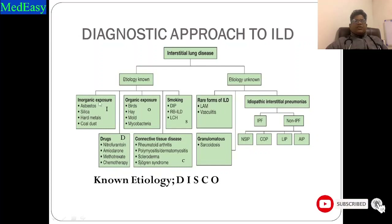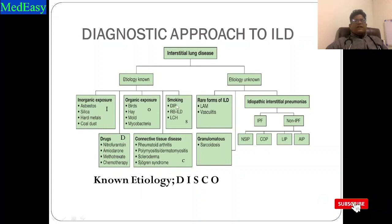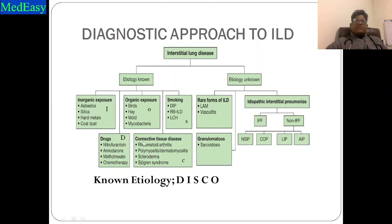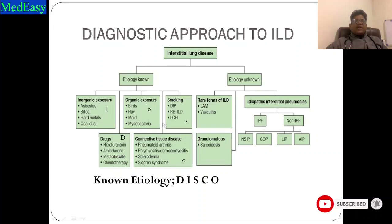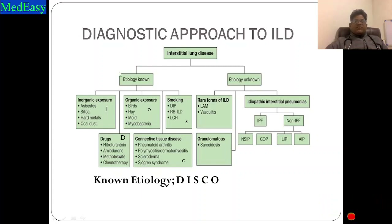I is for inorganic exposure — asbestos, silica, hard metals, coal dust. S is for smoking-related ILD like DIP, RB-ILD, and LCH, which are associated with smoking. C is for connective tissue disease-related ILD such as rheumatoid arthritis, polymyositis, dermatomyositis, scleroderma, Sjögren's syndrome. O is for organic exposure like birds, hay, mould, or mycobacteria. So the known etiology of ILD is summarized by DISCO.